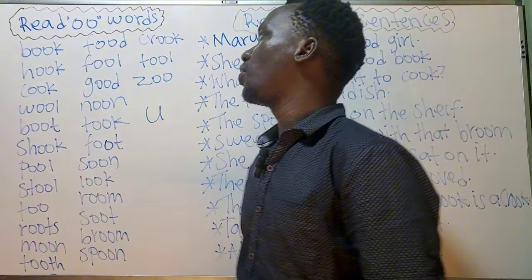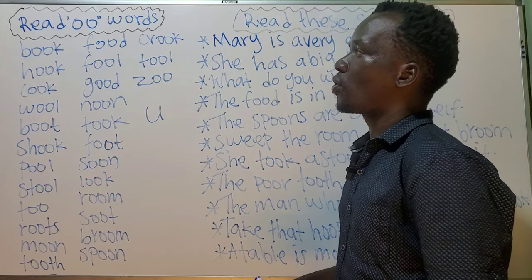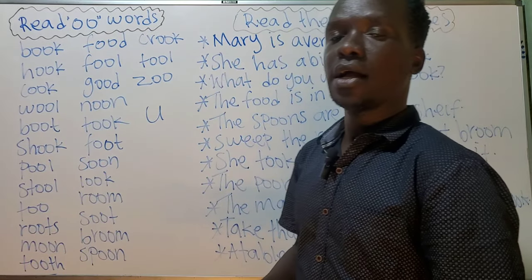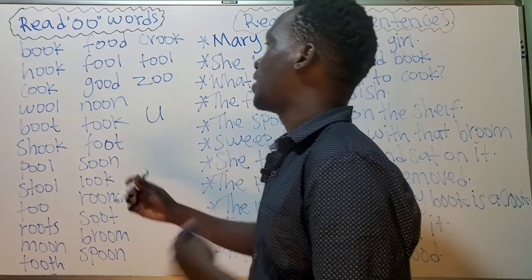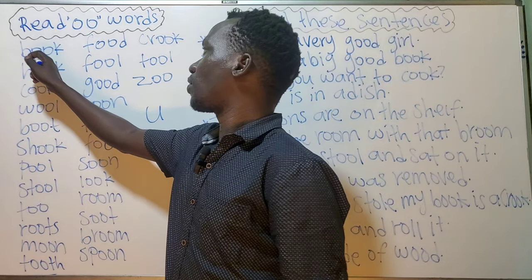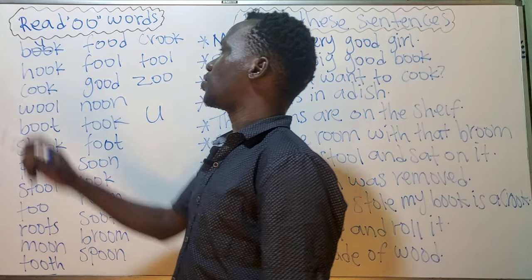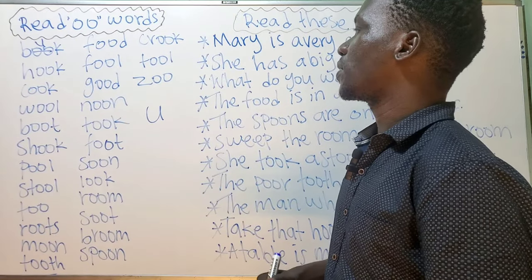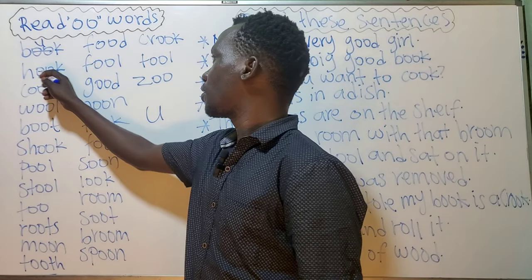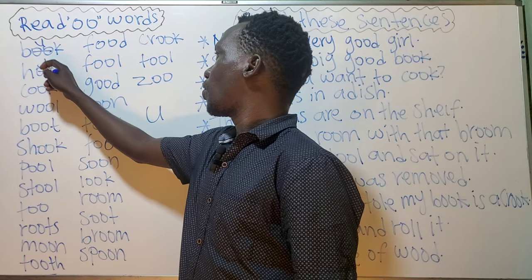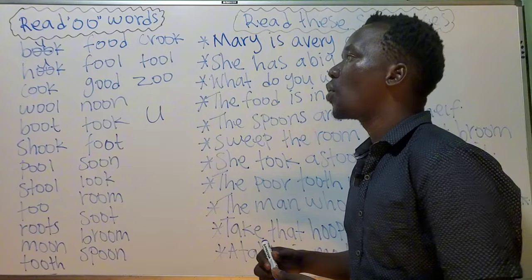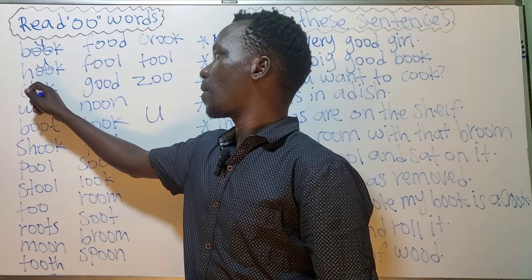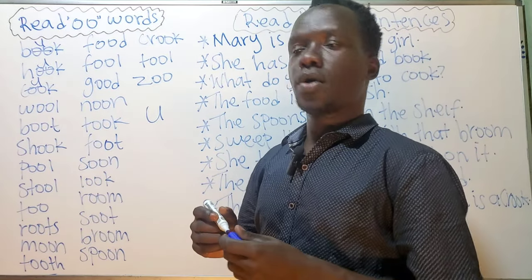As an example, here we have 'book.' Where you see double O, you put the 'u' sound — you can cross it and put 'u' there. That's how it sounds: book. Same here: hook, hook, and cook.